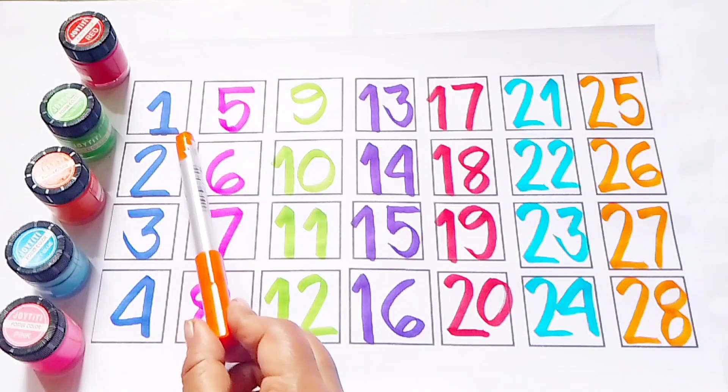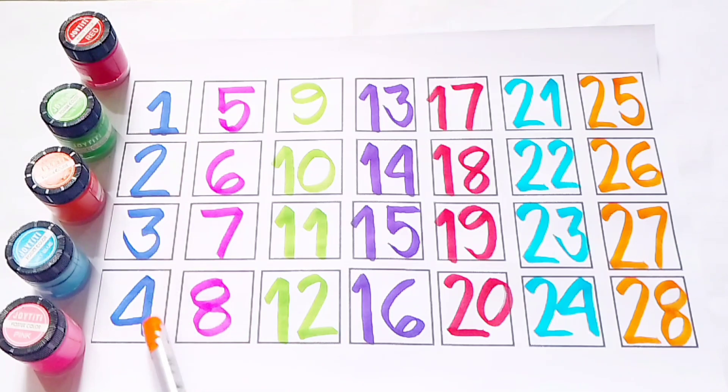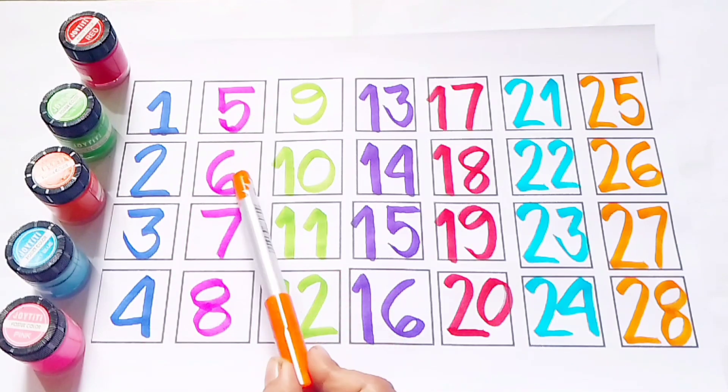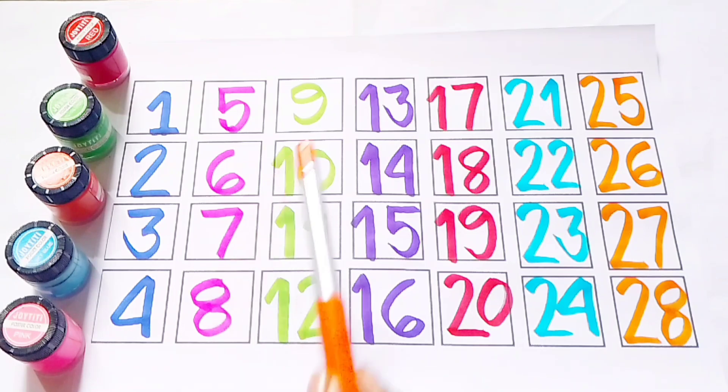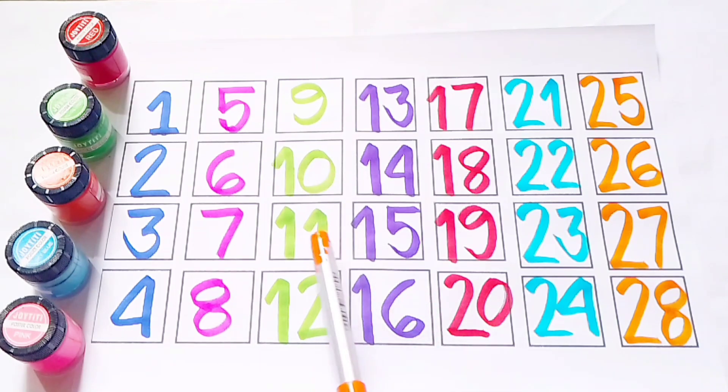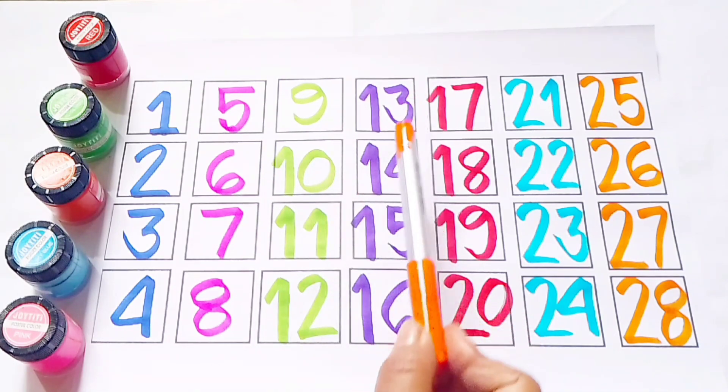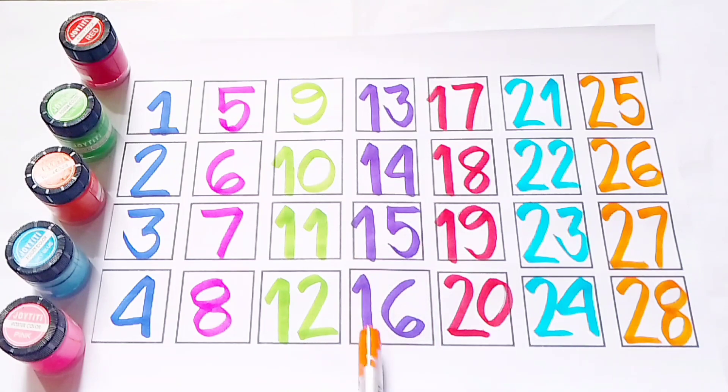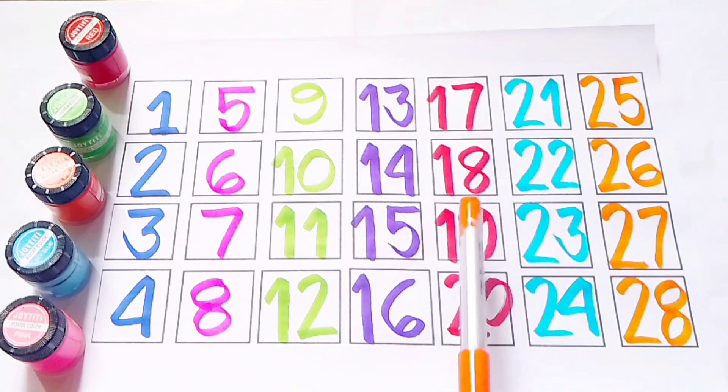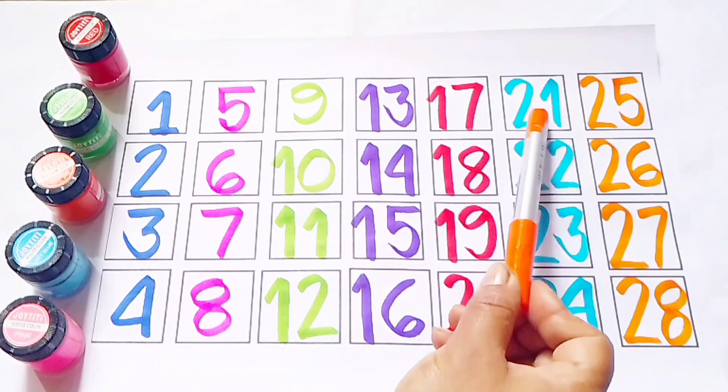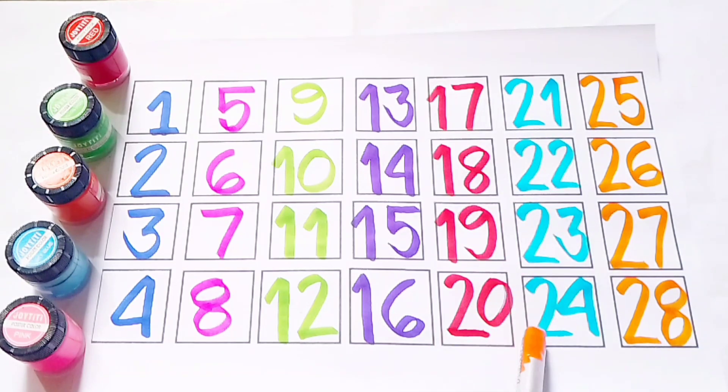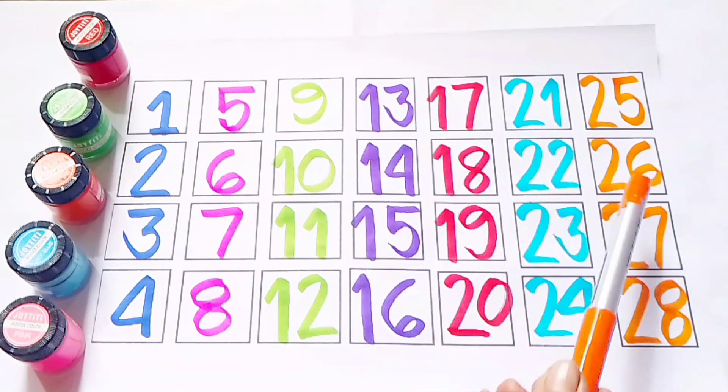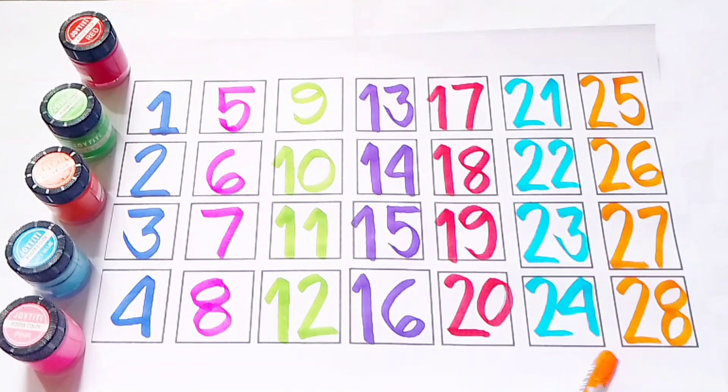1, 2, 3, 4, 5, 6, 7, 8, 9, 10, 11, 12, 13, 14, 15, 16, 17, 18, 19, 20, 21, 22, 23, 24, 25, 26, 27, 28. 27, 27, 28. 28, 28.